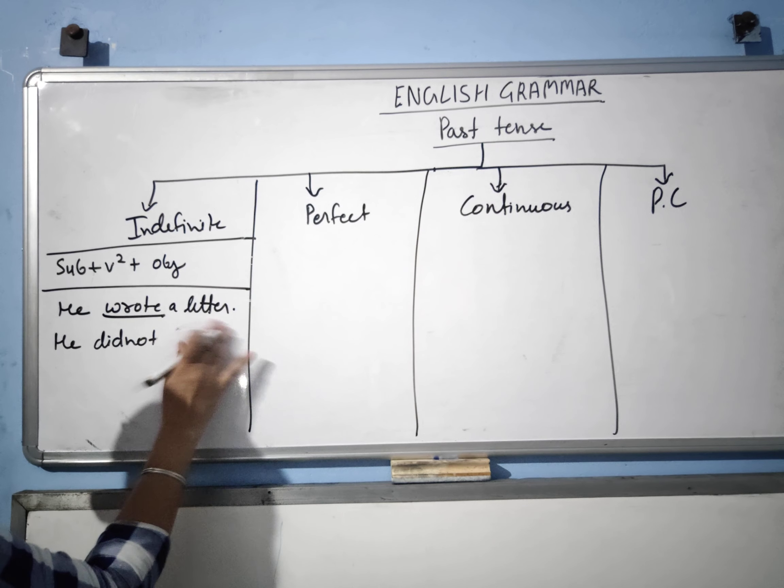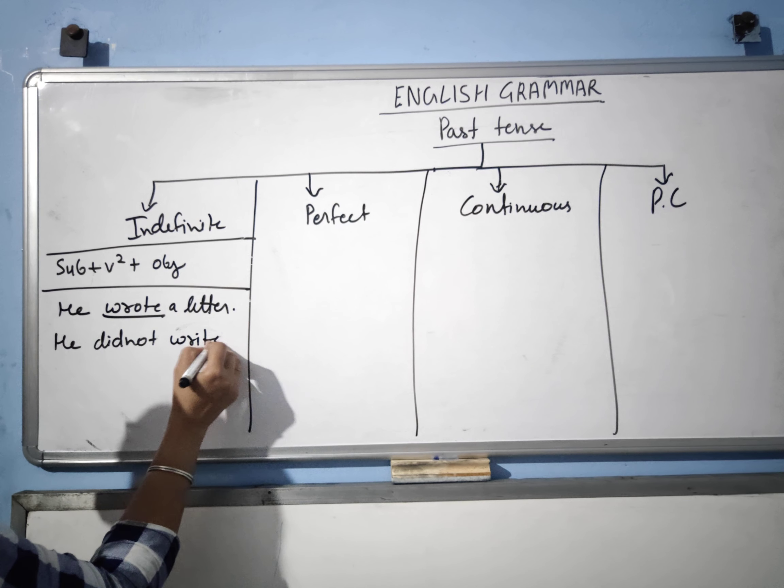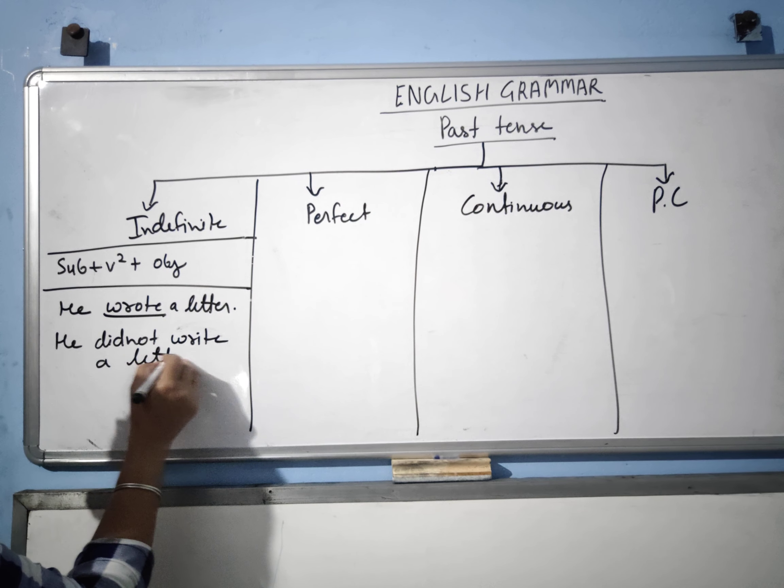Subject plus verb second form plus object. And in negative and interrogative sentences, you will use 'did'. For example: 'He wrote a letter.' This is the second form. He wrote a letter. If you make this sentence negative: 'He did not write a letter.'